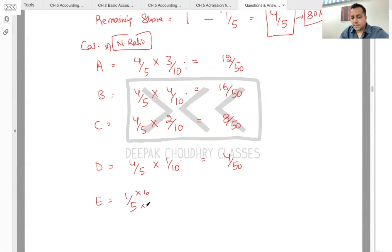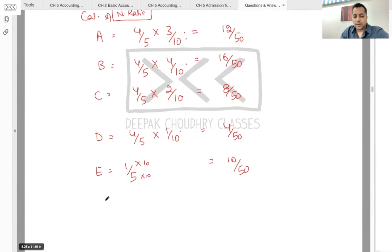To new ratio A, B, C, D ka hai - E ka kya tha? 20%, which is one-fifth. Agar 50 ki term mein baat karein, to 10 by 50. To new ratio kya aaya? A, B, C, D, E: 12:16:8:4:10.